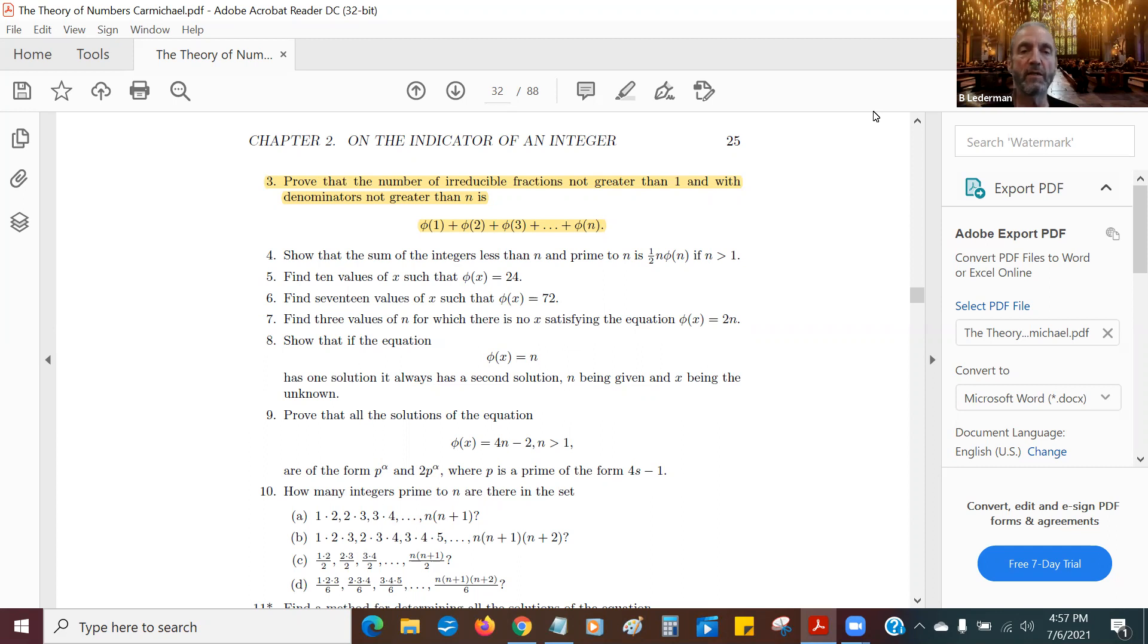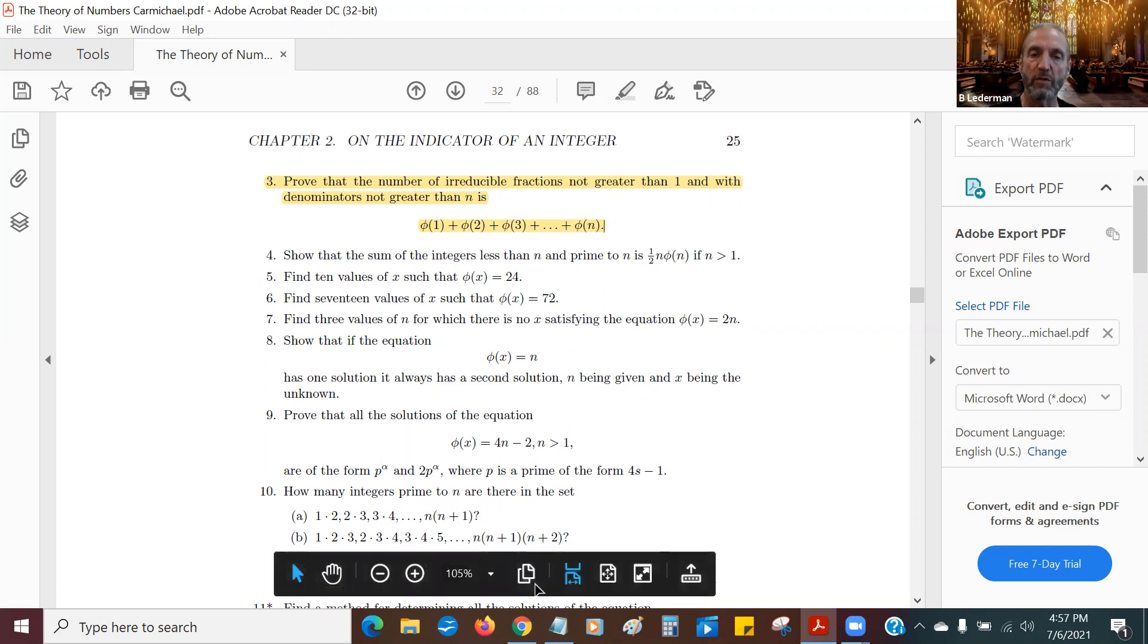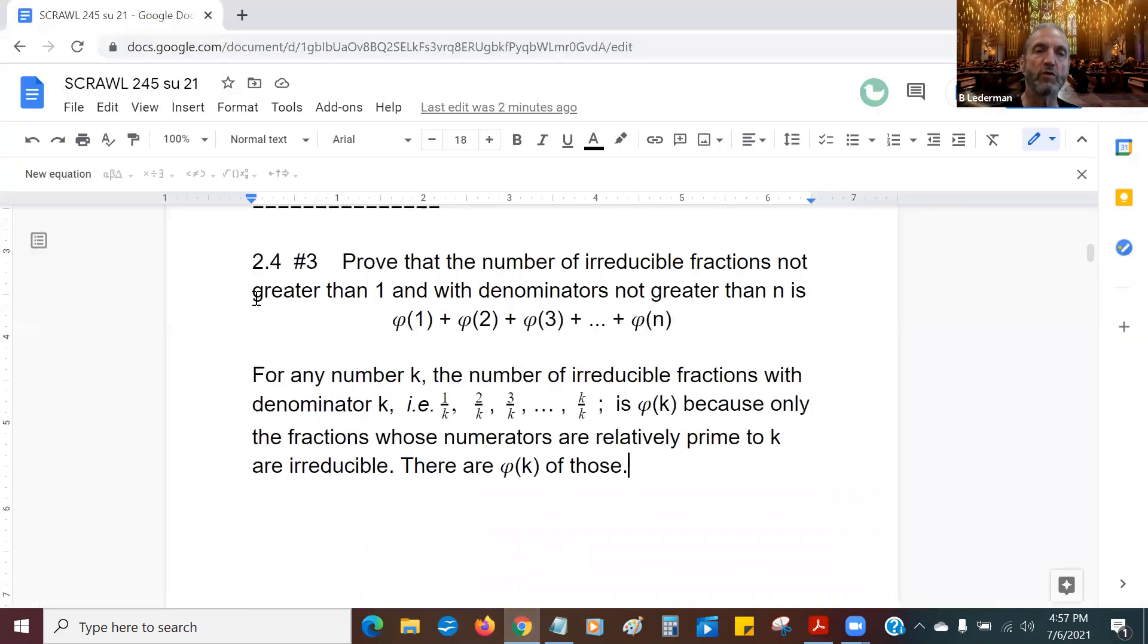Well, no sweat, let's do it right now. So 2.4 number three: prove that the number of irreducible fractions not greater than one with denominators not greater than n is φ(1) plus... well basically...